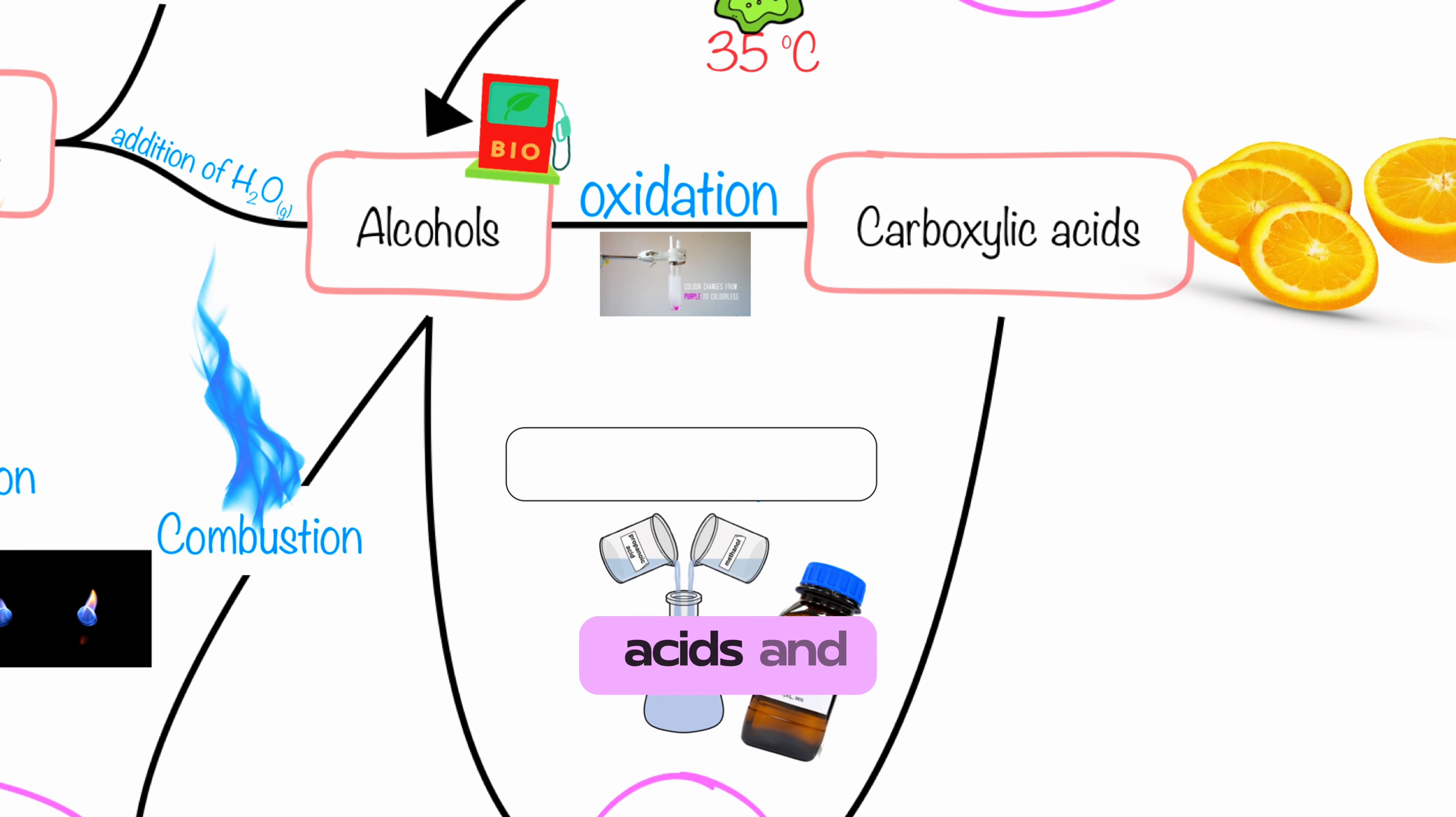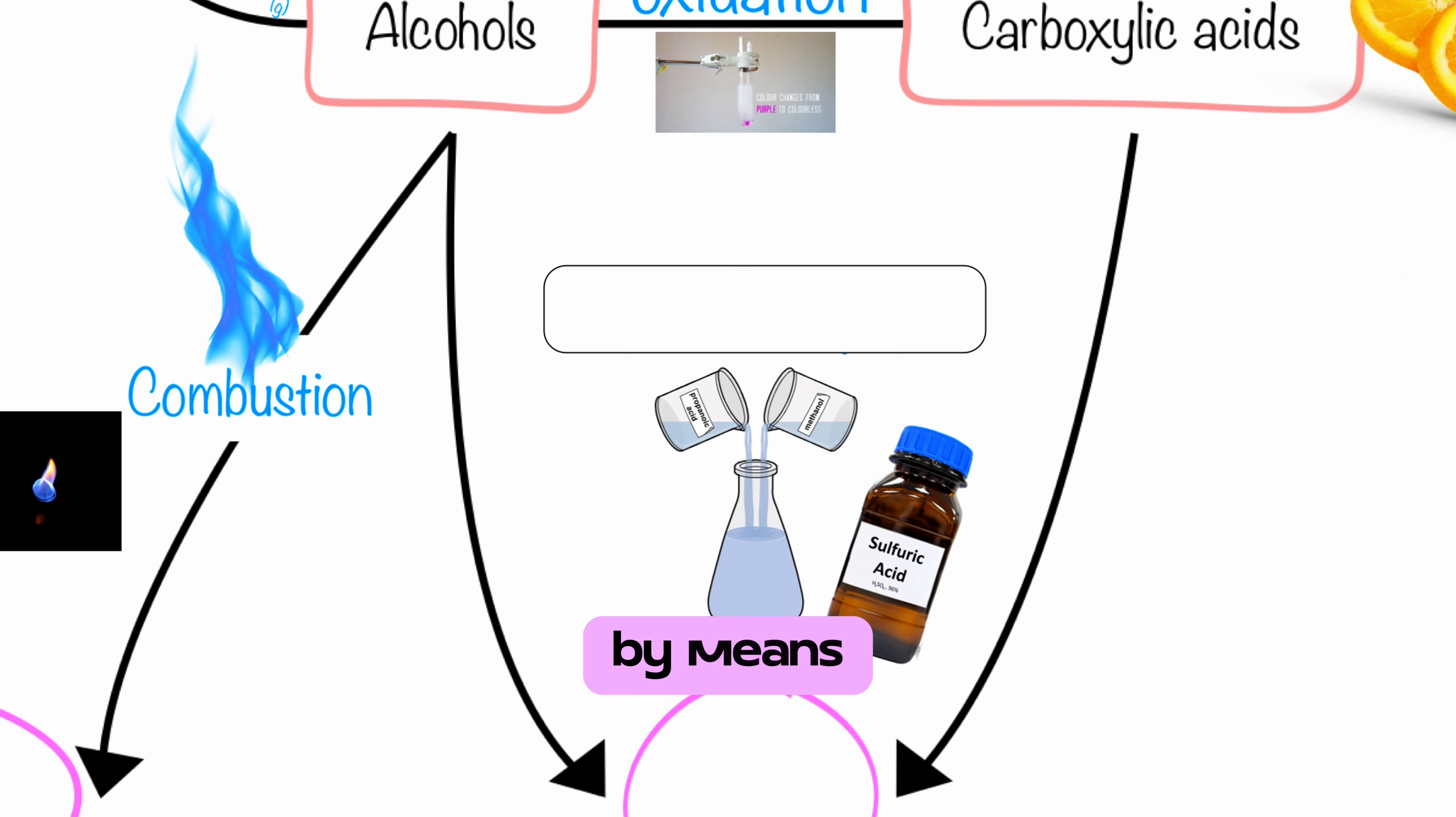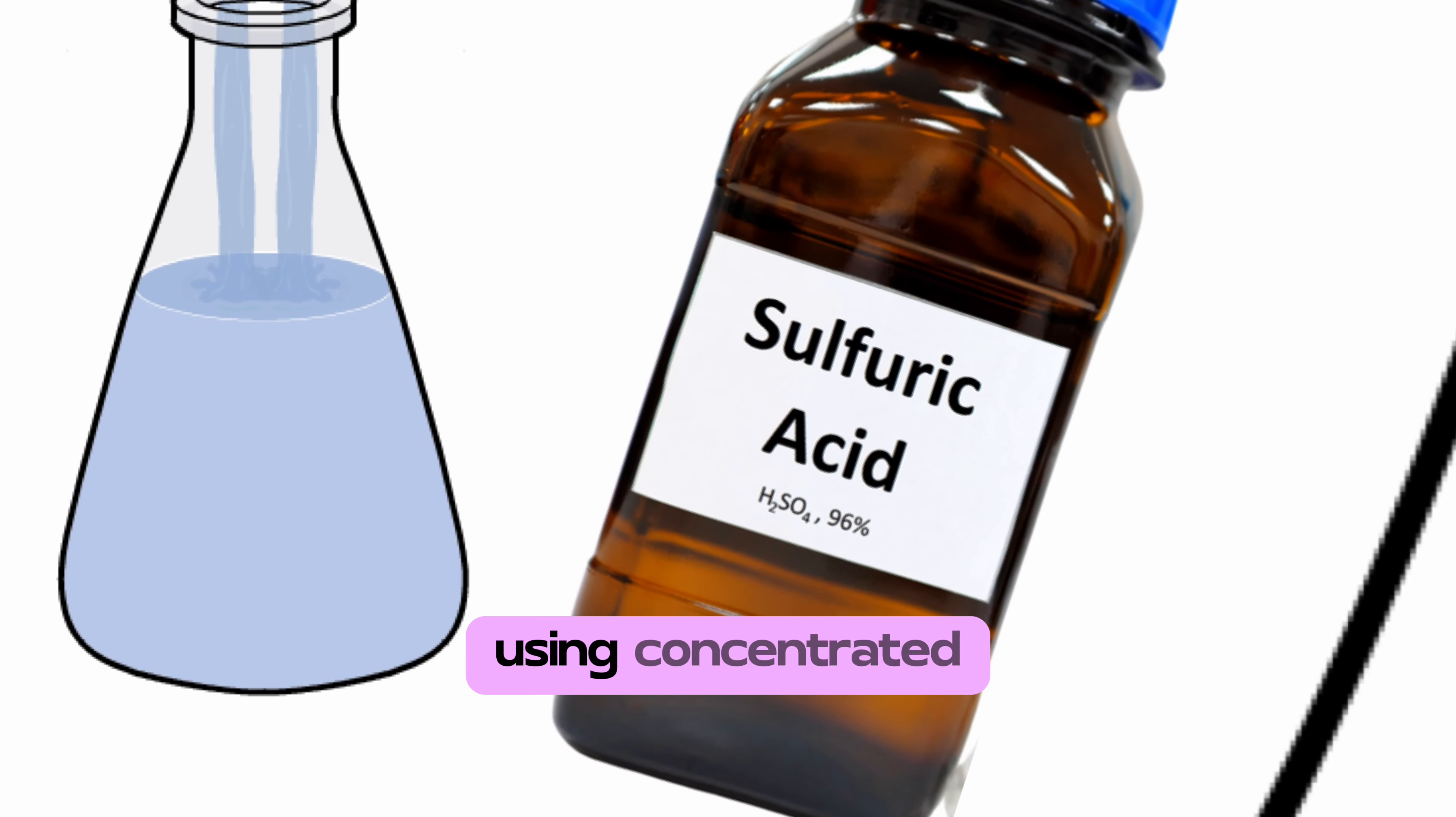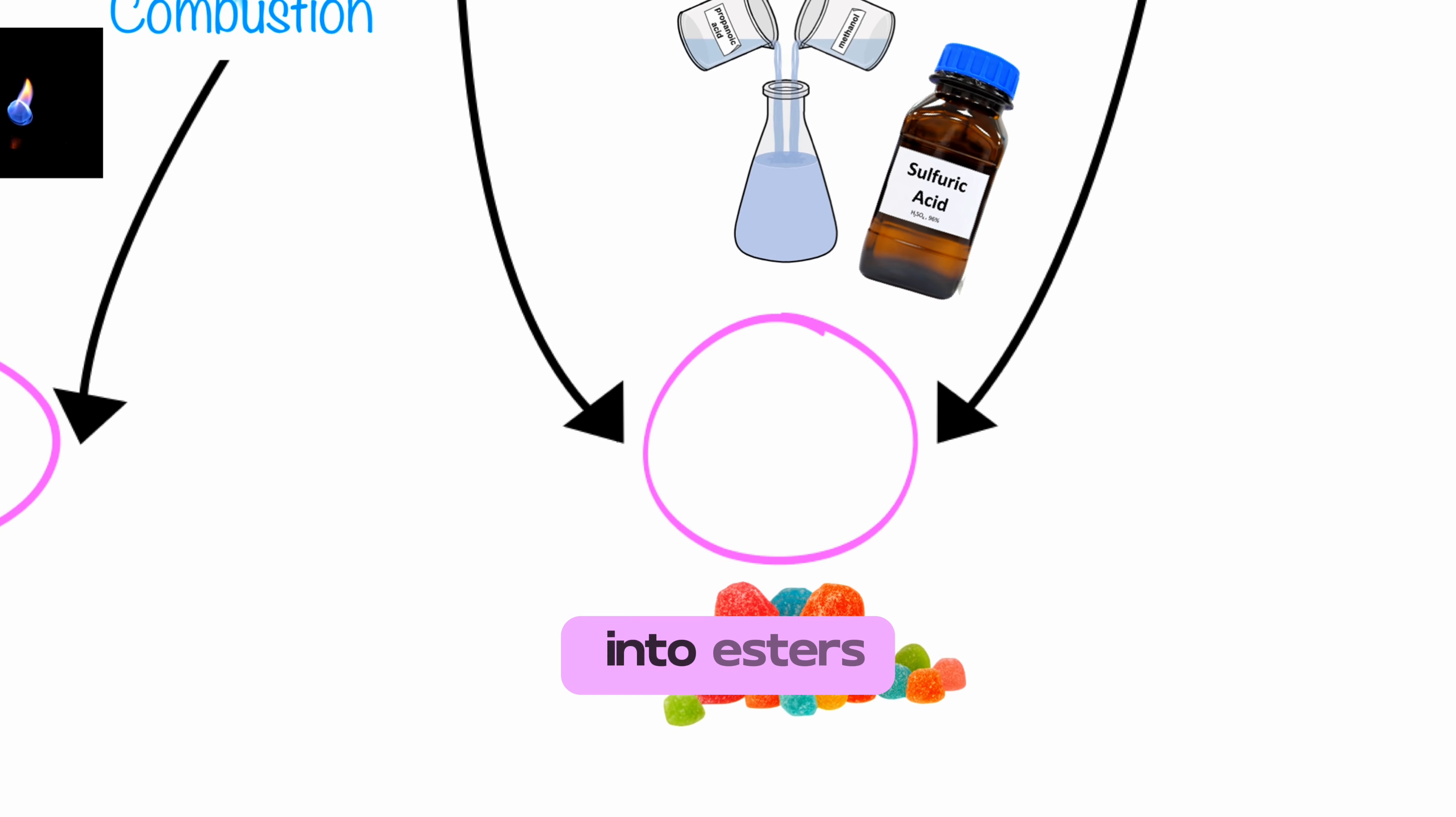Both carboxylic acids and alcohols can be combined by means of a condensation reaction using concentrated sulfuric acids into esters.